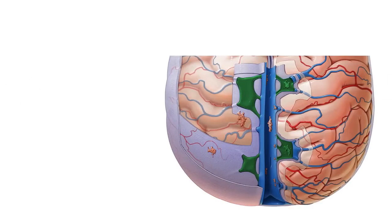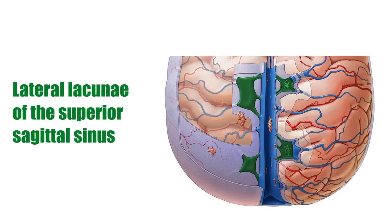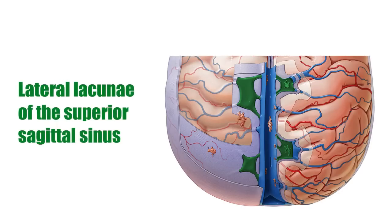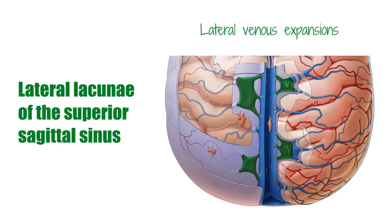There are small pits found on either side of the superior sagittal sinus, known as the lateral lacunae of the superior sagittal sinus. These small pits are lateral venous expansions of the superior sagittal sinus and they contain numerous arachnoid granulations.